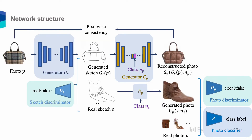To solve this problem, we propose to learn photo-to-sketch and sketch-to-photo translation jointly, and narrow the domain gap between synthesized and real sketches. This is our network structure. It has two generators, GS and GP, and two discriminators, DS and DP, for the sketch and photo domains respectively. We can turn open domain photos into sketches using the GAN framework. It also includes a photo classifier R, and the whole network is trained together from scratch.